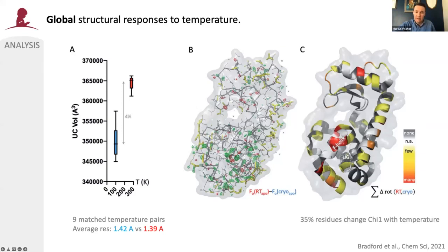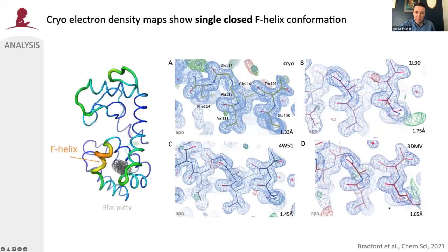This is the ligand binding site, and ligand binding is accommodated by the so-called F helix, which is a mobile area that responds to ligand binding. Looking across the protein, more than a third of all residues have a change in the chi-1 angle with temperature, especially in the site of interest of the F helix.